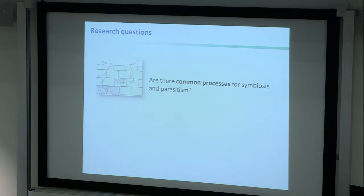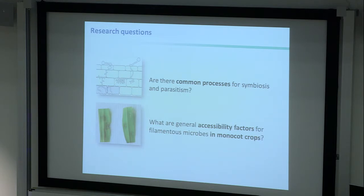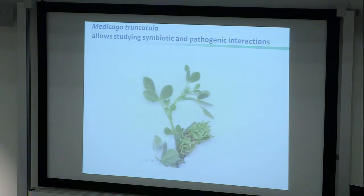As mentioned, in a symbiont this interface is hugely extended to provide a larger surface area for exchange. The research questions we're pursuing are: are there common processes for symbiosis and parasitism of filamentous microbes and plants? And are there general accessibility factors in plants for filamentous microbes — can we identify those specifically in monocot crops to generate plants resistant to filamentous pathogens?